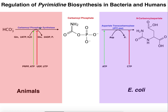Let's talk about the first two steps in this pathway. Recall that bicarbonate, along with the amine from glutamine and phosphate from ATP, are converted to carbamoyl phosphate by carbamoyl phosphate synthetase. Then carbamoyl phosphate can be converted to N-carbamoyl aspartate by aspartate transcarbamylase, abbreviated ATCase.